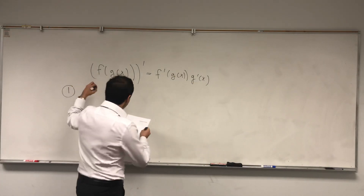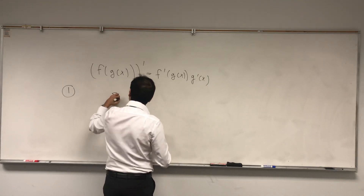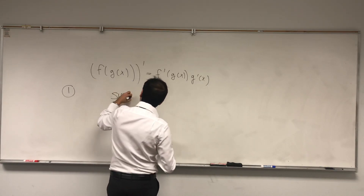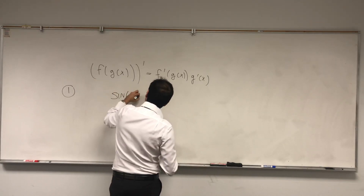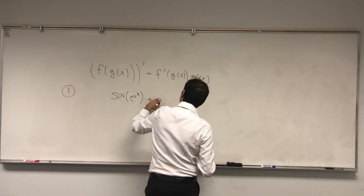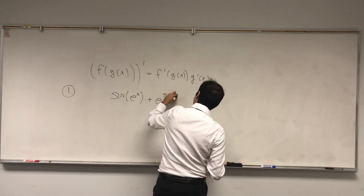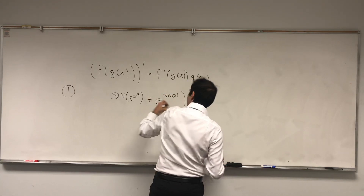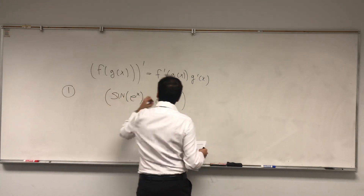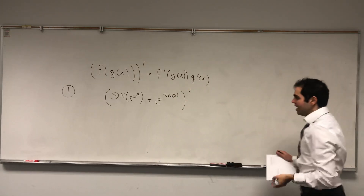So the first problem is: let's calculate the derivative of sine of e to the x, plus e of sine of x, with respect to x.